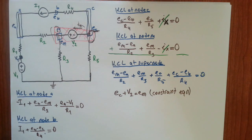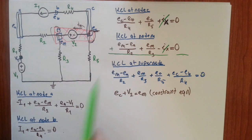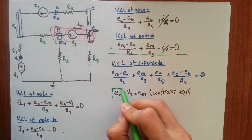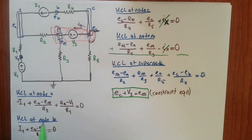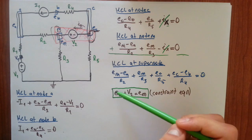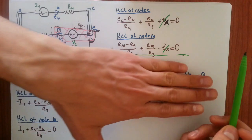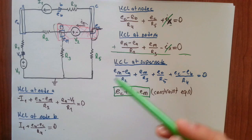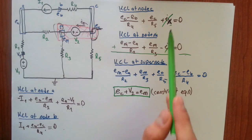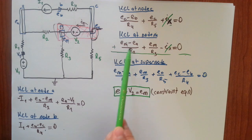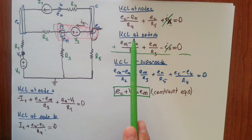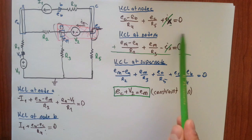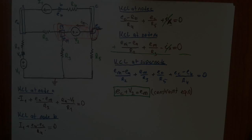You might note that the constraint equation is also valid for the original method with Ix. In that case, we had five unknowns including Ix, and five equations — so both methods are solvable. You can analyze the circuit either by introducing an unknown current Ix, or by using the super node method. That's all for this video. Thanks for watching. Bye.